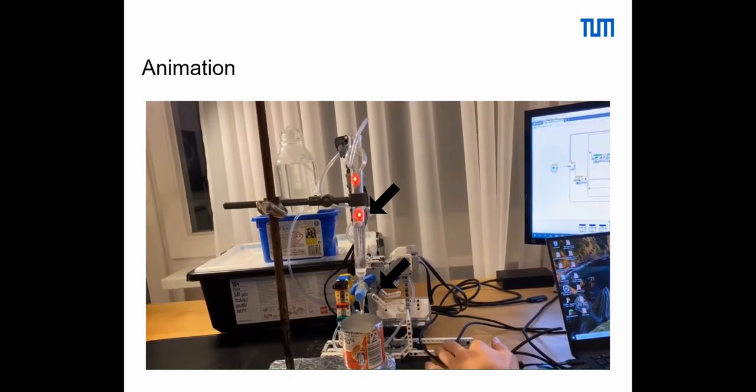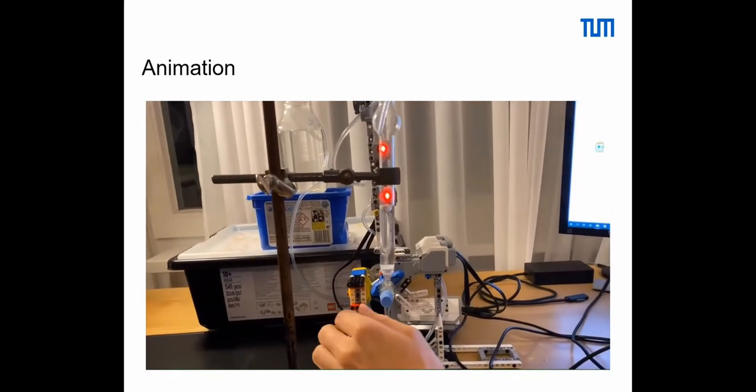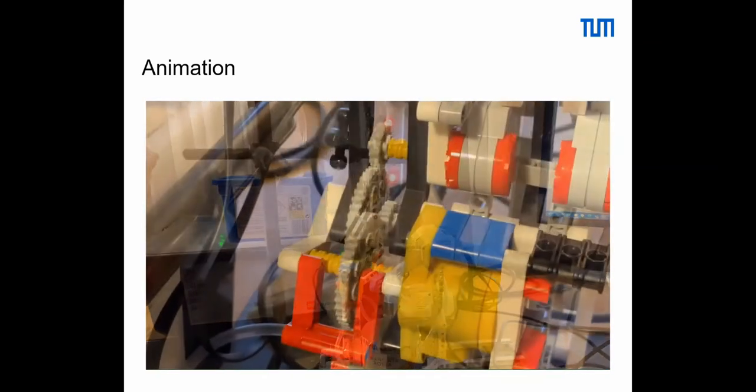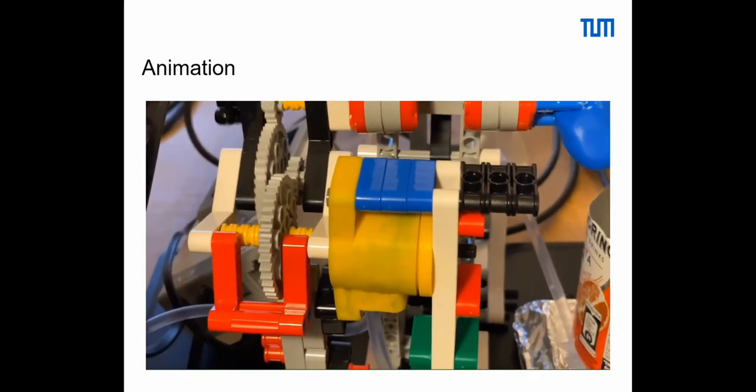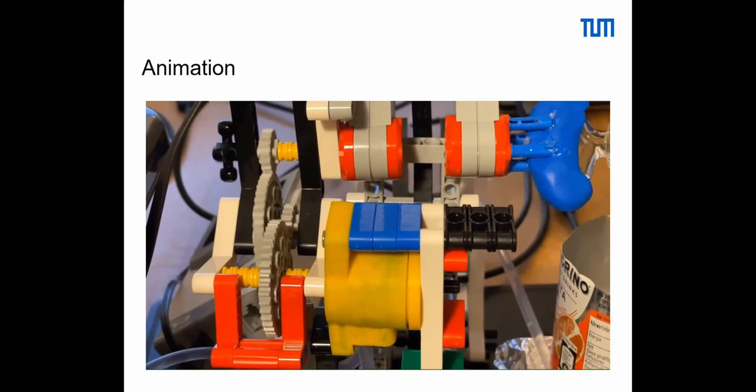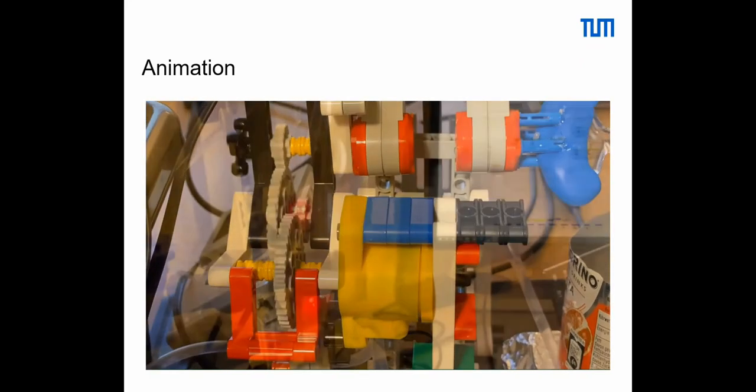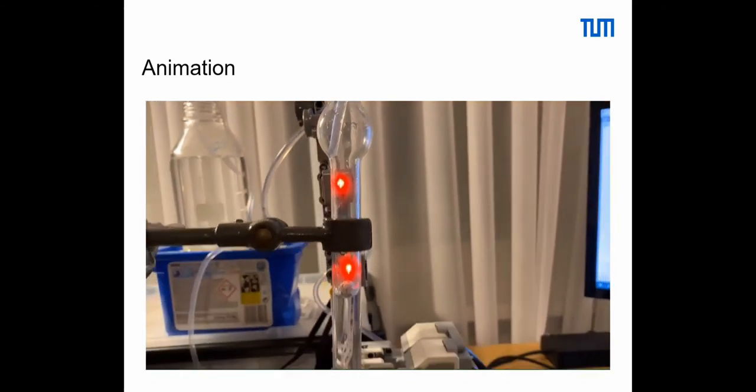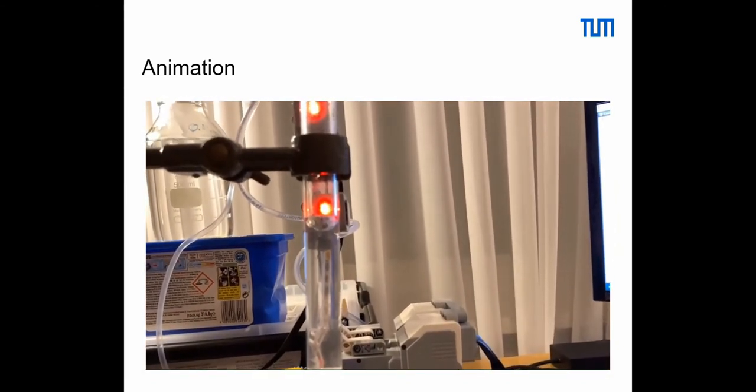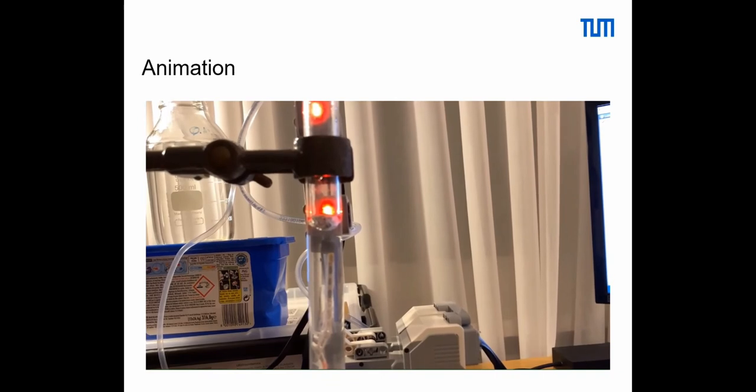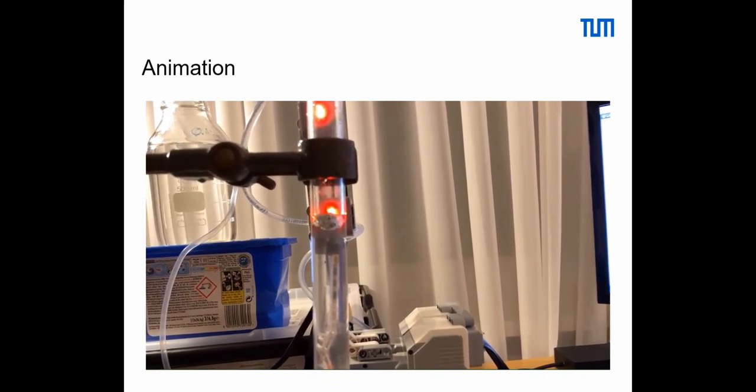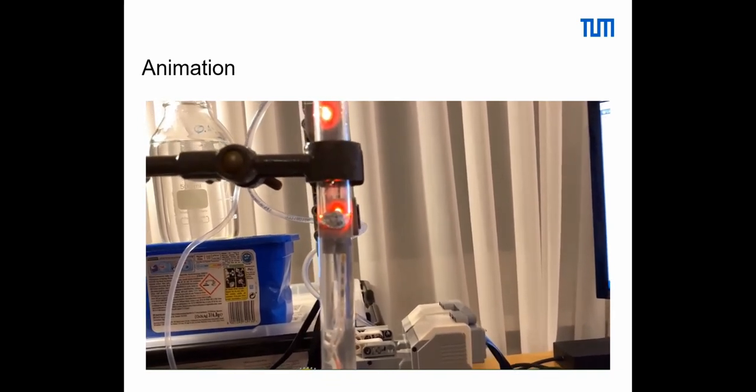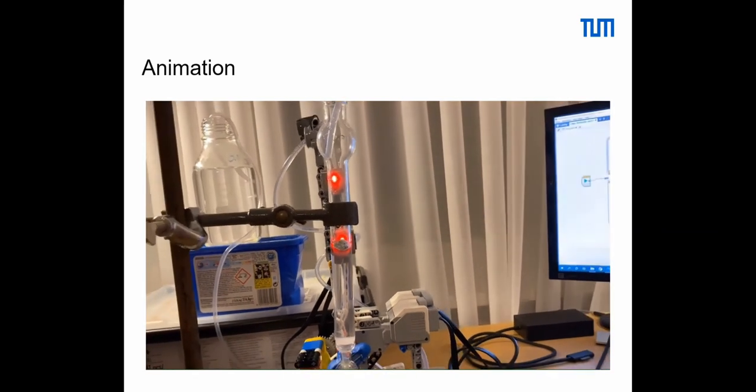This is a lego-peristaltic pump that this group built and it serves to refill the column as you can see here. Basically the aluminum ball rises with the level of fill that the column has and once it reaches the second sensor the chromatography can start anew.